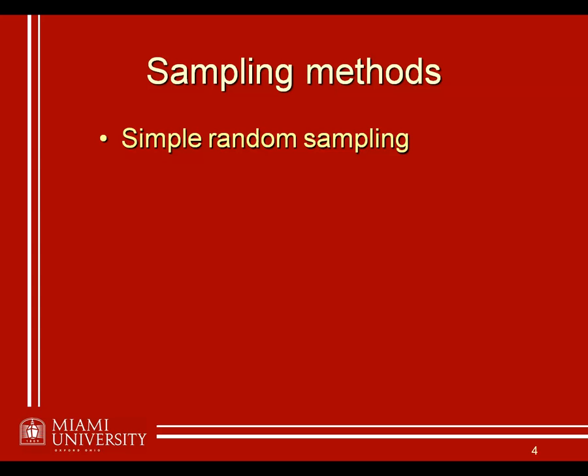So in this case you have the entire list of people to which you have access and you're randomly generating which ones to contact out of that. Another method is what would be called matched random sampling. You would use this method in particular if you think that there's a key variable that might have some sort of effect on what you're doing.